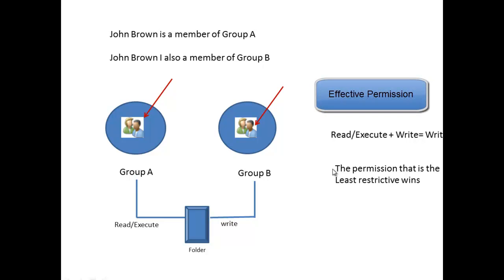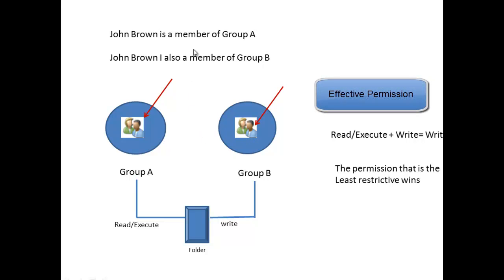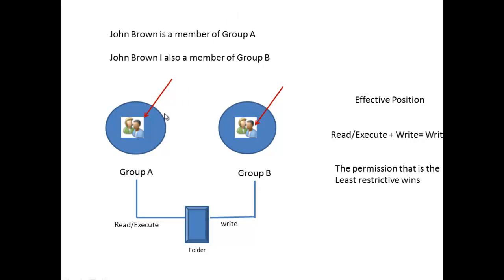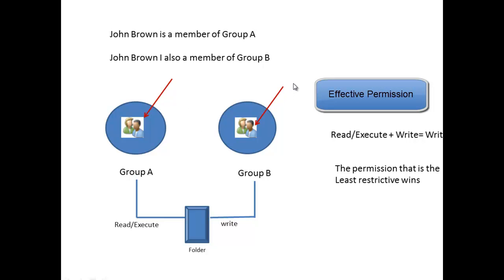Let's look at an example of giving permissions. Here we have Group A and Group B. John Brown is a member of Group A, but he is also a member of Group B. Group A has the NTFS permission read and execute, and Group B was given the NTFS permission write. Now, if John is a member of both groups, what is John's effective permission on that folder?